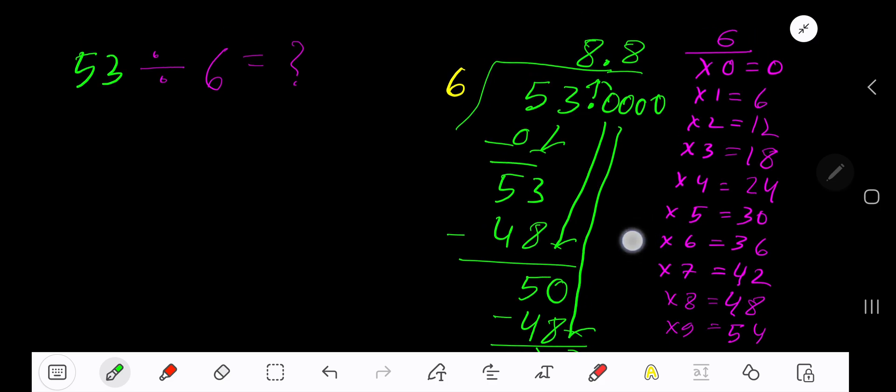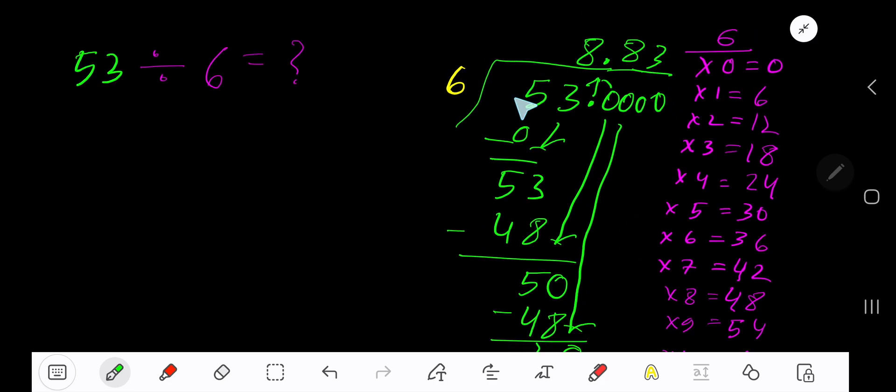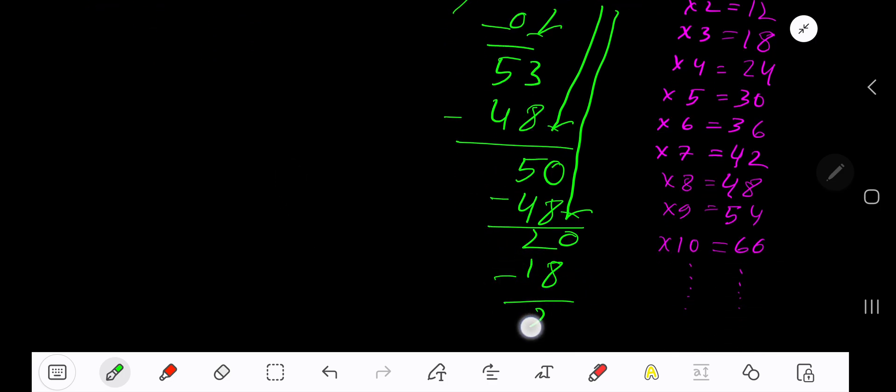6 goes into 20 how many times? 3 times. 3 times 6, 18. Subtract 2.